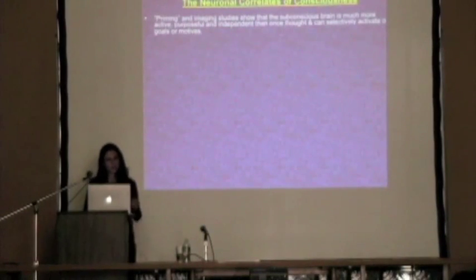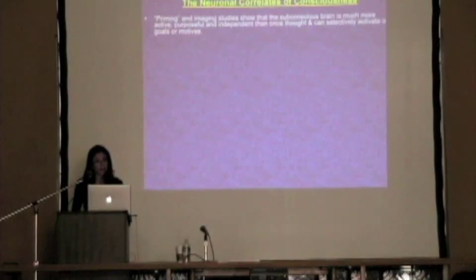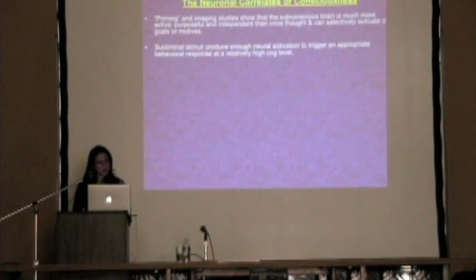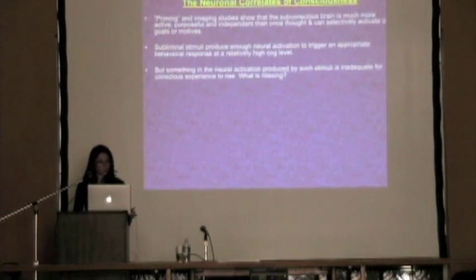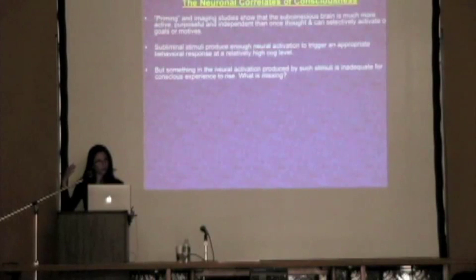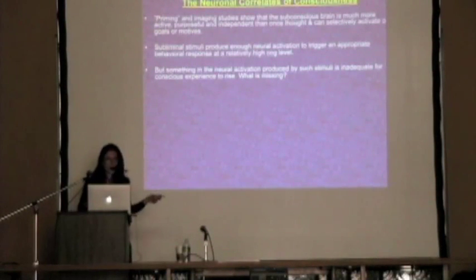Given these priming and imaging studies, they all seem to show that the subconscious or unconscious brain is much more active, purposeful, and independent than we once thought — it can selectively activate our goals and motives. Subliminal stimuli produces enough neural activation to trigger an appropriate behavioral response at a relatively high cognitive level. But something in the neural activity produced by subliminal stimuli is not adequate for consciousness to arise. It's adequate enough to affect our thoughts and behaviors, but something is missing in that neural activity — and that something is consciousness. So what's missing?